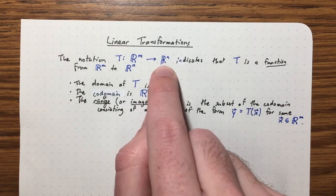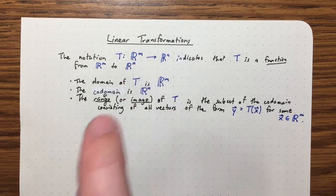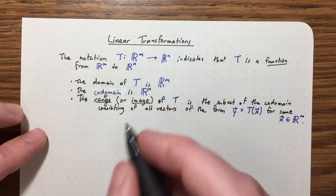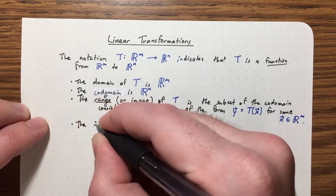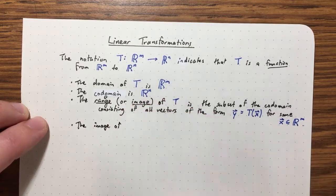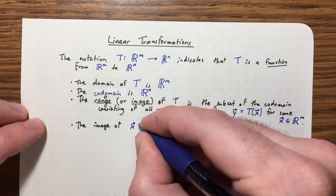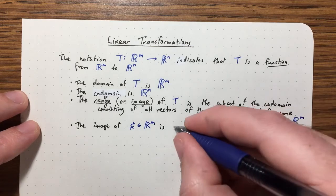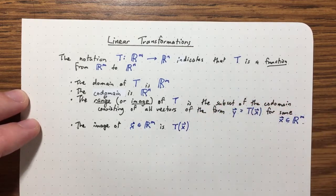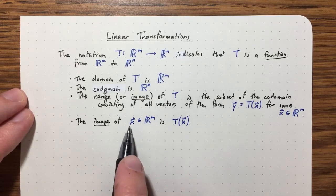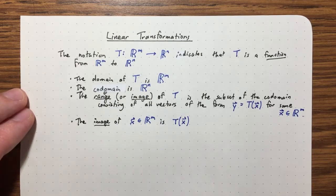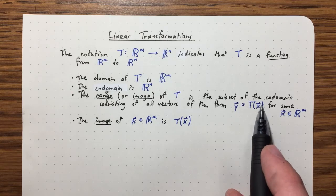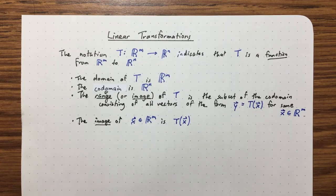So the image is only the things in Rⁿ that actually get mapped to by something in Rᵐ. We can also talk about the image of a single element: the image of a single vector x in the domain is just T(x). So there are two ways to use the word image — the image of a certain element, or the image of the entire transformation, which is all vectors of the form T(x).